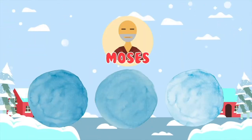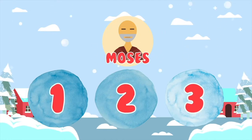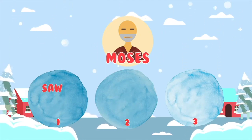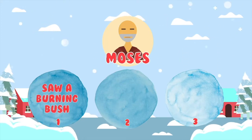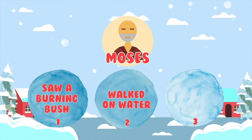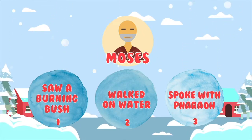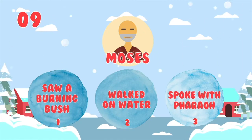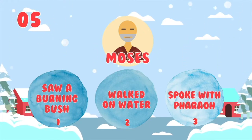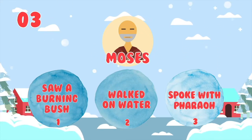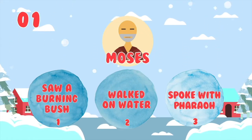Moses is our next Bible character. Which of these is not true about Moses? One: Moses saw a burning bush. Two: Moses walked on water. Three: Moses spoke with Pharaoh. It's time to decide. Which snowball do you think is not telling the truth?